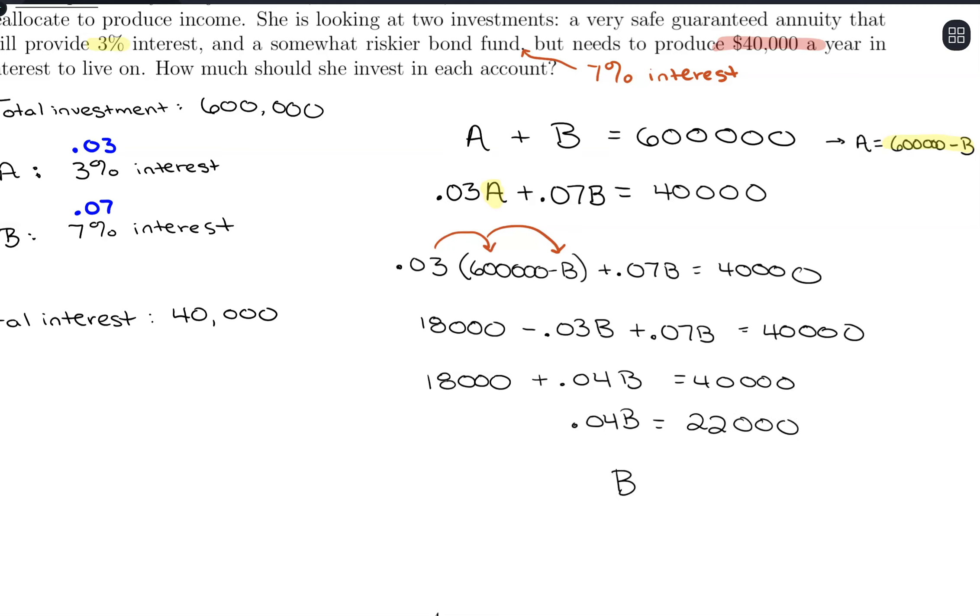Divide by 0.04, and we're going to get B equals 550,000, which means A is going to make up the difference to get to 600,000, which would be 50,000. So we would need to invest $550,000 into account B and $50,000 into account A to get this $40,000 of interest to live on each year.